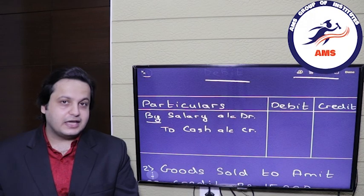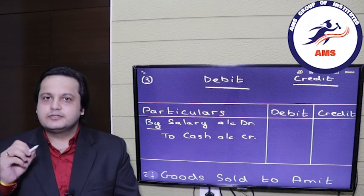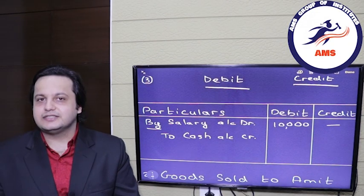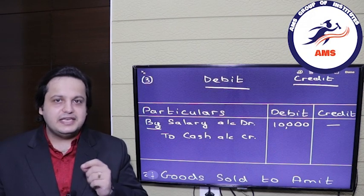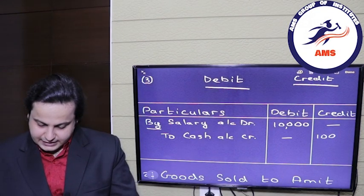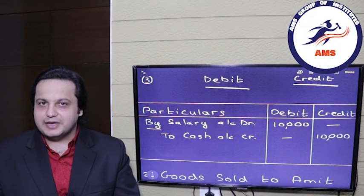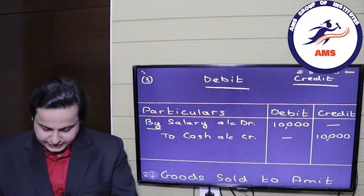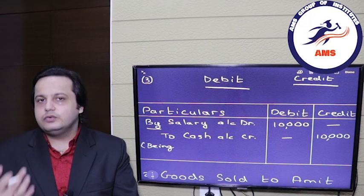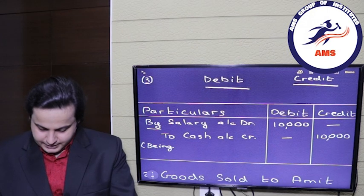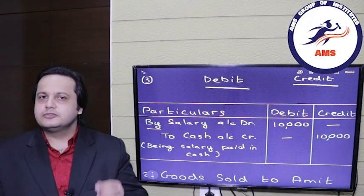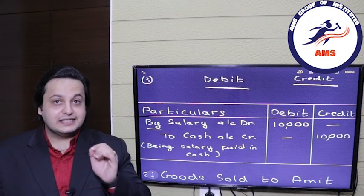The salary being paid was 10,000 rupees. Since salary is being debited, we write 10,000 in the debit column and nothing on the credit side. For cash, which is being credited, we insert 10,000 rupees on the credit side and nothing on the debit side. The last step is the narration. Narration will always start with 'Being': 'Being salary paid in cash.' This is how you do a journal entry following the steps.